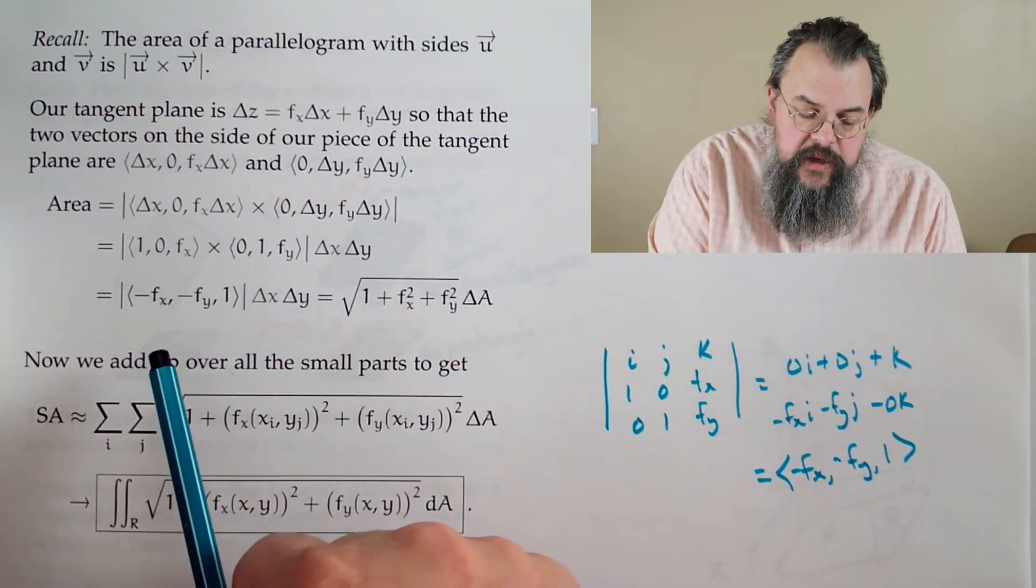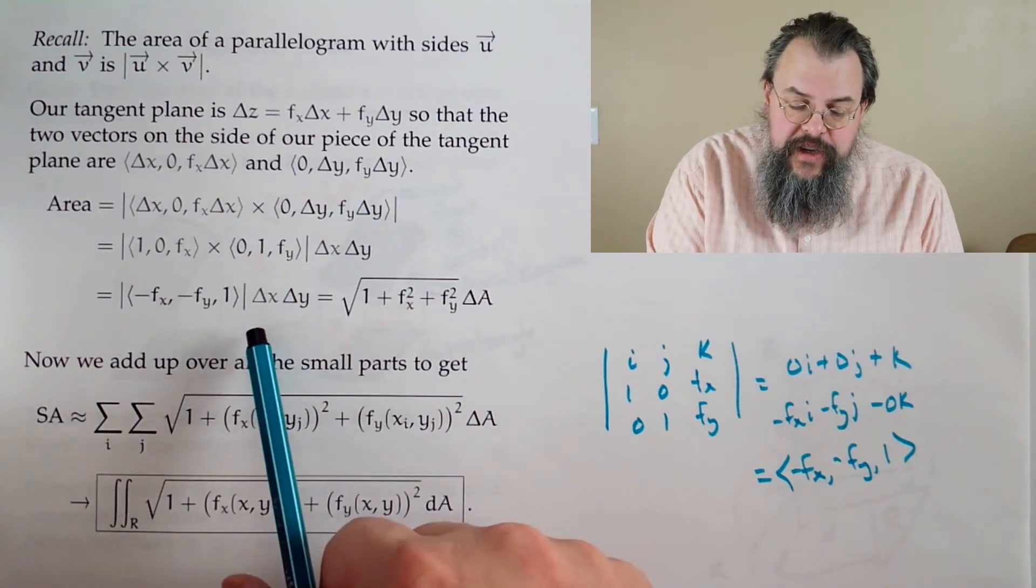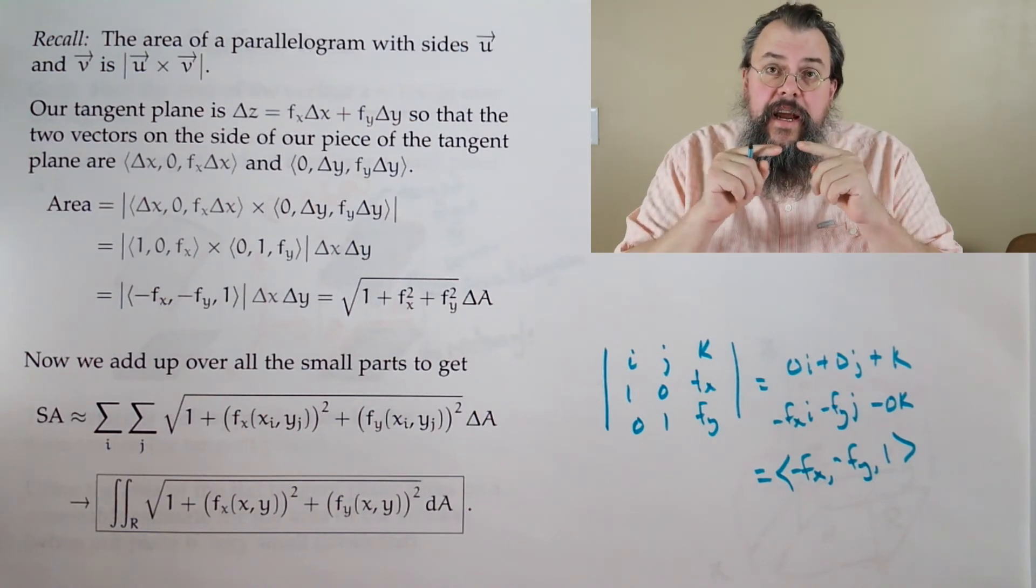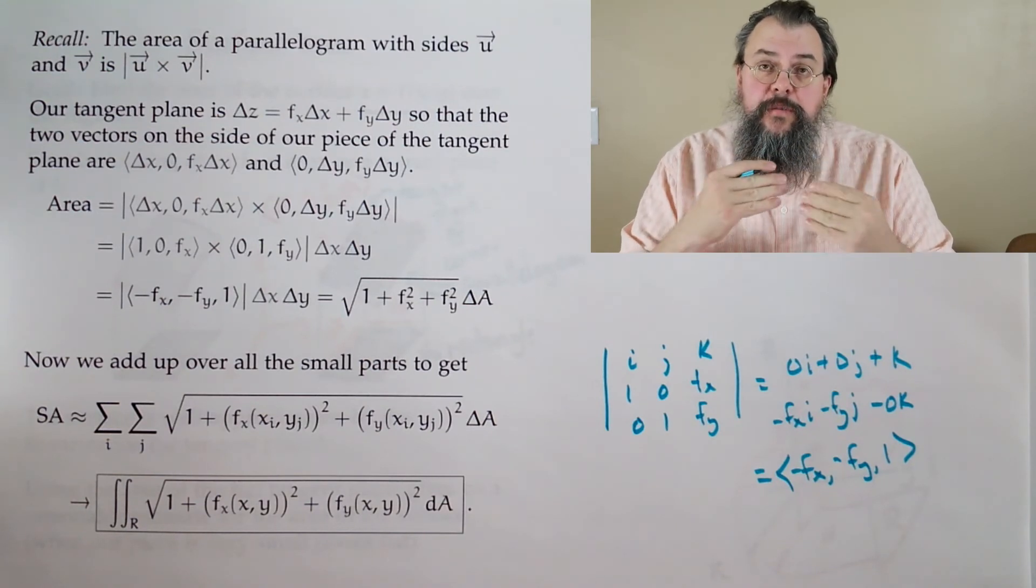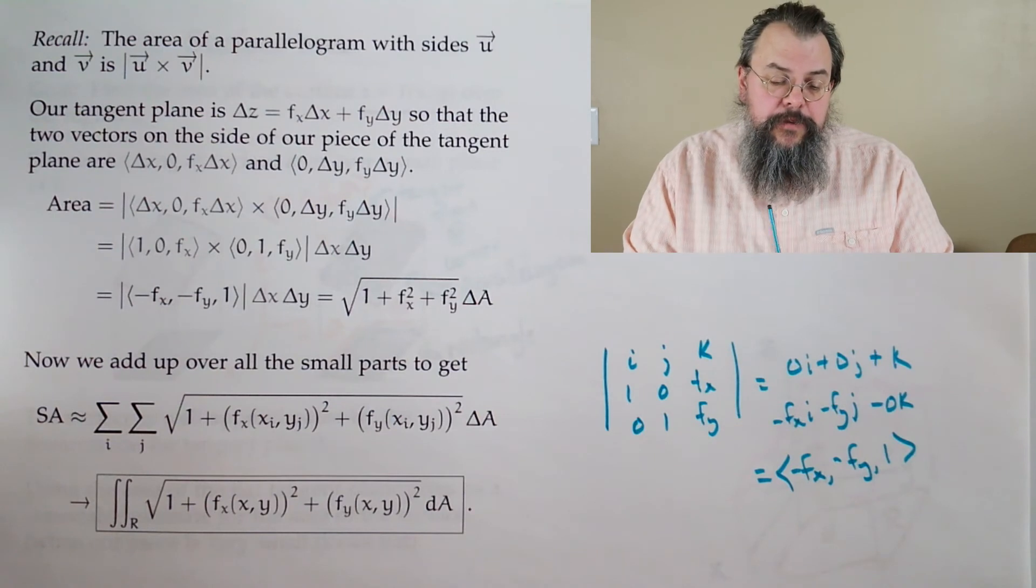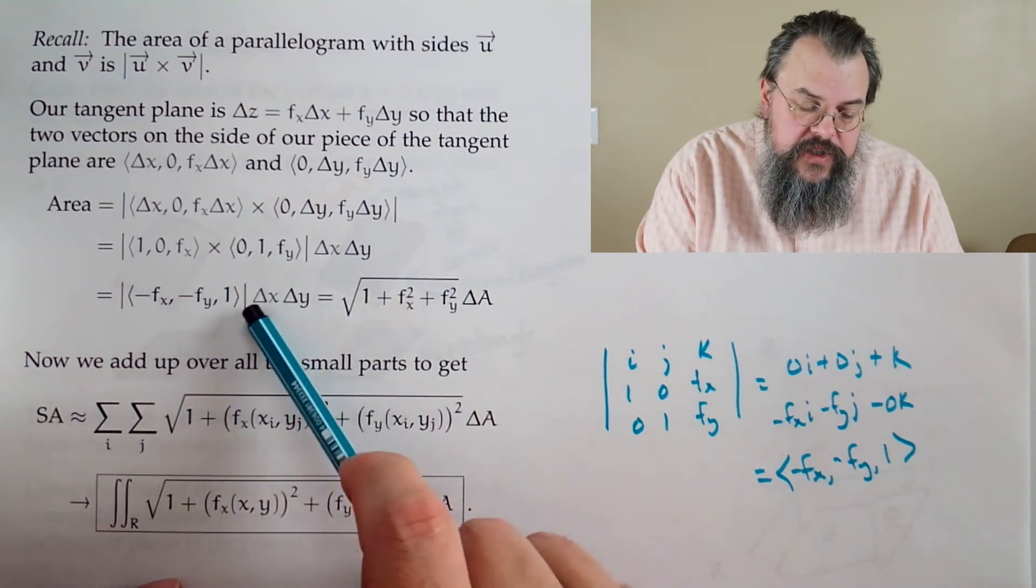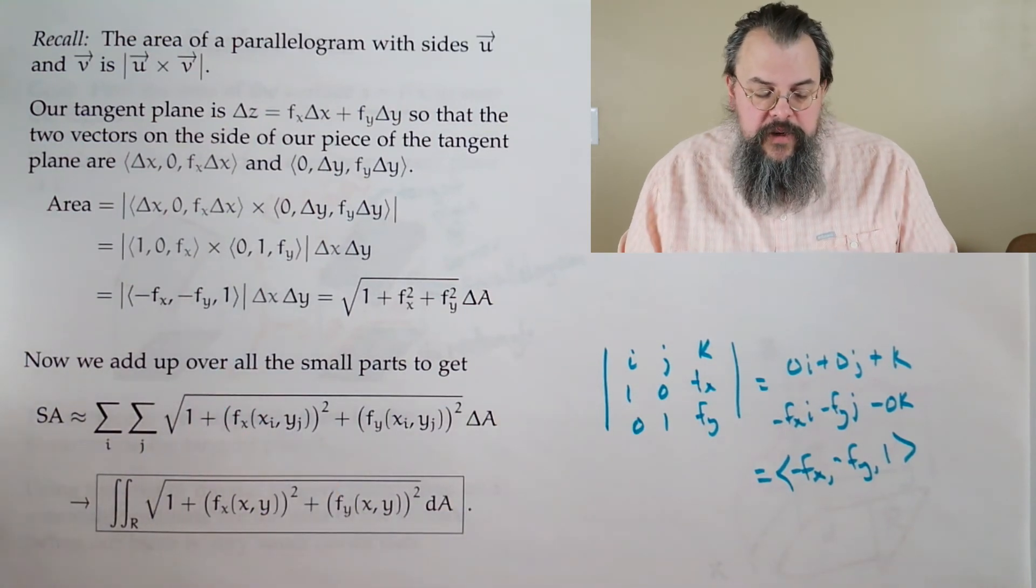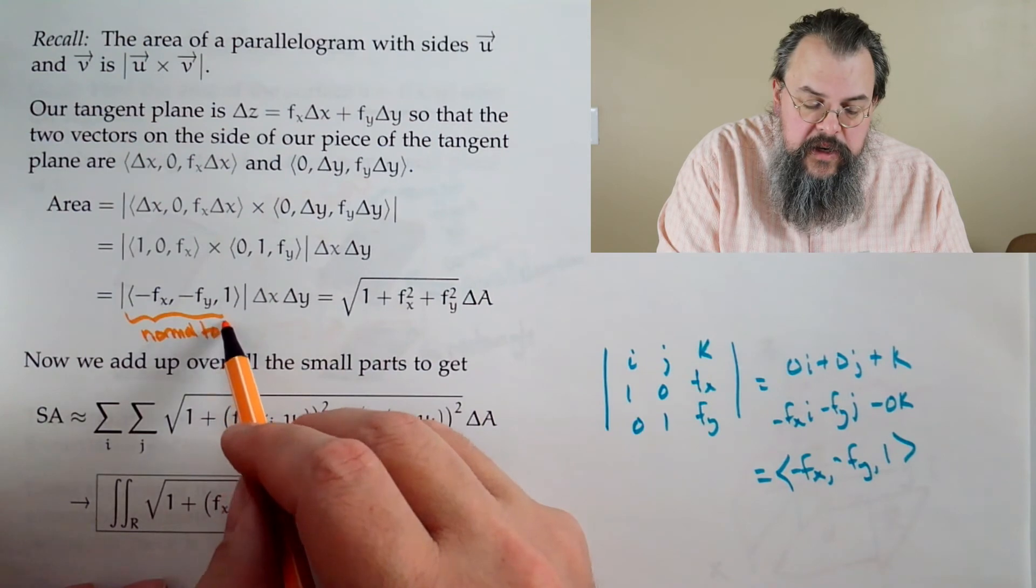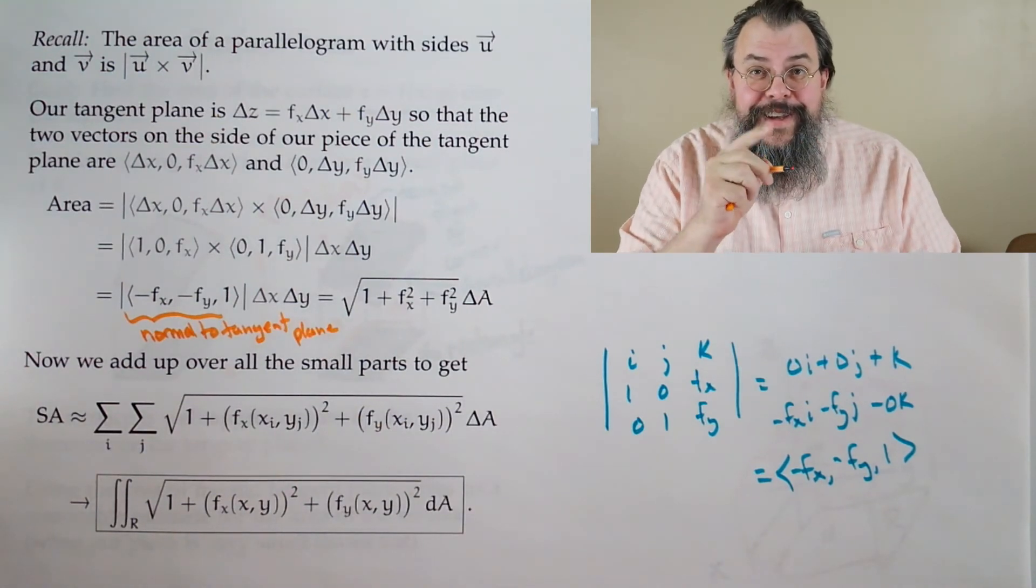Now just take the magnitude of that. What do you get? The square root of 1 plus f_x squared plus f_y squared. And the Δx Δy, that's your ΔA. That's fantastic. That says that the area of that little piece that's doing the approximation for the area of the surface has a nice clean formula. On a side note, because this will come up again later on, this isn't just any expression here. What you really have is that this is a normal to the tangent plane. And we'll see that come up again in a couple of weeks as we move forward.